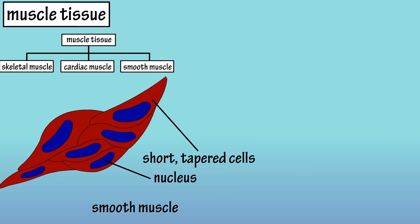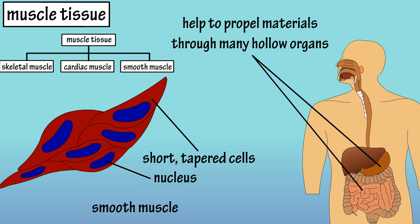Smooth muscle tissue does not have striations like the other muscle tissues do, and their cells are short and tapered at the ends. They are under involuntary control, are located in the walls of many hollow organs such as the stomach, intestines, and blood vessels, and function to move and propel materials through these organs.